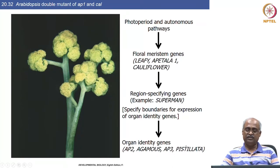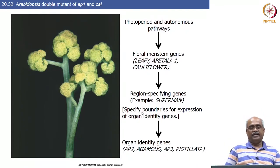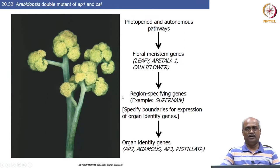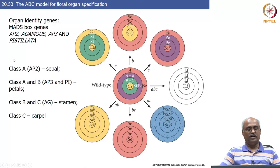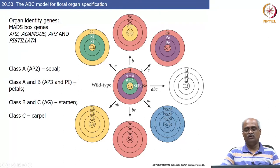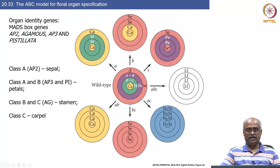Today we are going to focus on what the floral organ identity genes are and how they function. The floral identity genes belong to three broad categories called A, B, and C groups, and the model to explain how organs are determined is called the ABC model. The flower primordium has concentric whorls: the outermost forms the sepals (calyx), then the corolla forming petals, then the stamens, and finally the carpels. If class A alone is expressed it becomes sepal.